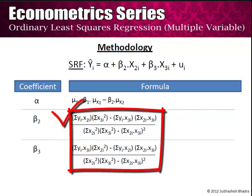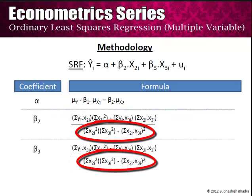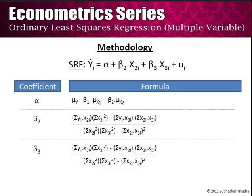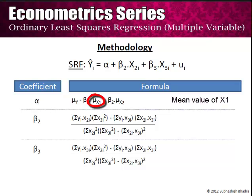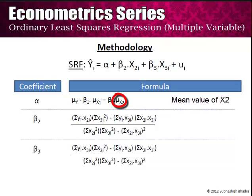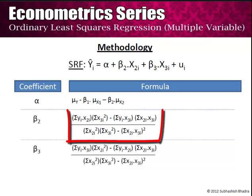Note that the denominator in case of β₂ and β₃ or any other slope coefficient is also the same. Alpha is given by μ_y minus β₁·μ_x₁ minus β₂·μ_x₂, where μ_y, μ_x₁ and μ_x₂ are the mean values of y, x₁ and x₂ respectively. The value of β₂ is given by: summation of yᵢ·x₂ᵢ into summation of x₃ᵢ² minus summation of yᵢ·x₃ᵢ into summation of x₂ᵢ·x₃ᵢ.